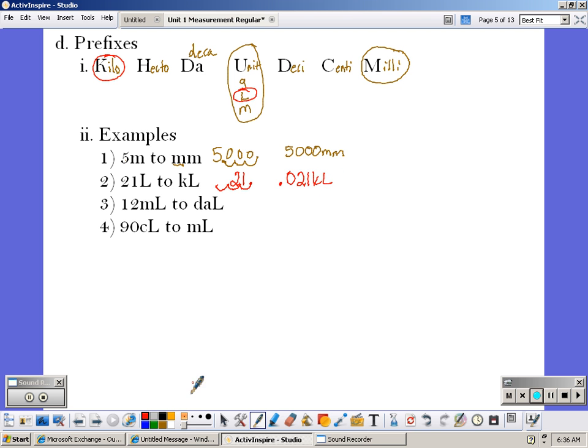In number three, I have twelve milliliters. Again, there's the prefix before another word, so that means milli. I'm trying to get it to decaliters. So I would move my decimal one, two, three, four times to the left. One, two, three, four, and fill in with zeros, so 0.0012 decaliters.